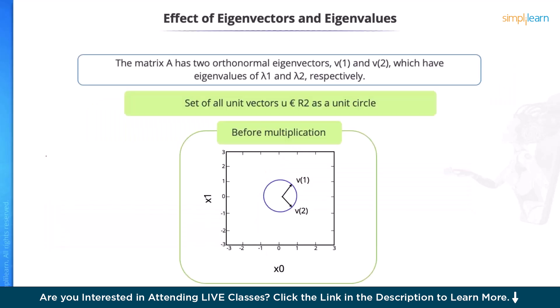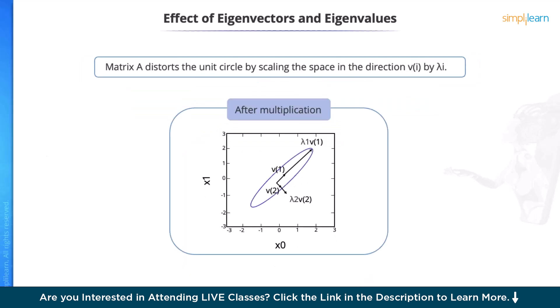Effect of eigenvectors and eigenvalues — let's consider an example. The matrix A has two orthonormal eigenvectors V1 and V2, which have eigenvalues λ1 and λ2 respectively. We plot the set of all unit vectors U as a unit circle represented in blue. Then we plot the set of all points A·U. By observing how matrix A distorts the unit circle, we can see that it scales the space in direction Vi by λi. In the direction V1, the space has been scaled by λ1, and in the direction V2 by λ2.